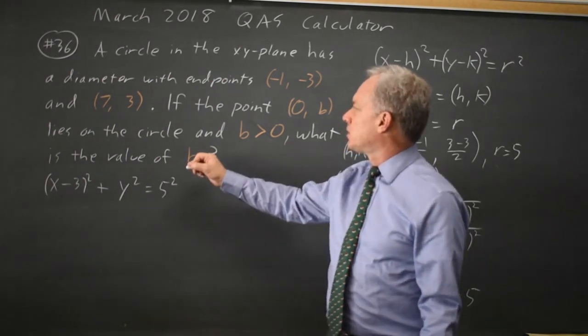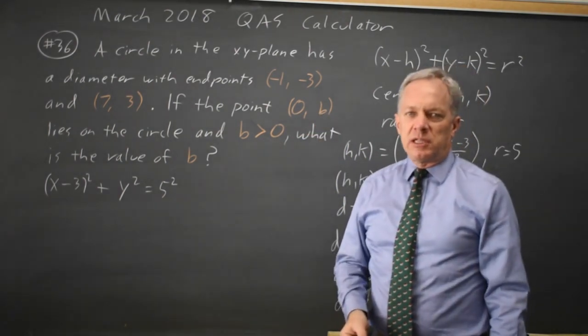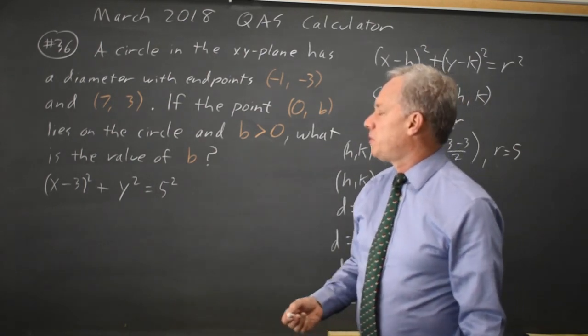Now that I have the equation for the circle, I can answer their question. If x equals 0 and y equals b is a point on the circle, so a point that satisfies this equation, what is the value of b?